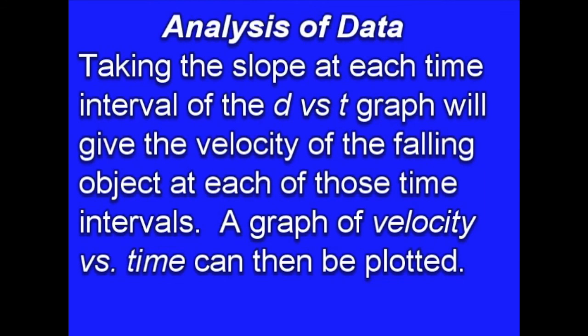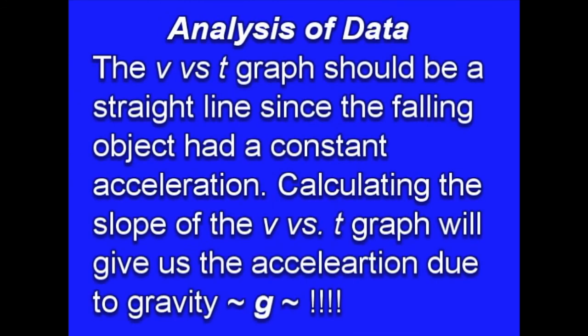After we get the distance-time graph, we're going to use an estimation technique where we take the point before and the point after each data point to figure out the slope of the distance-time graph — that's going to be the velocity. Then we draw the velocity-time graph, and the slope of it will give us the acceleration due to gravity. Hopefully we'll get 9.8 meters per second squared, or 980 centimeters per second squared.